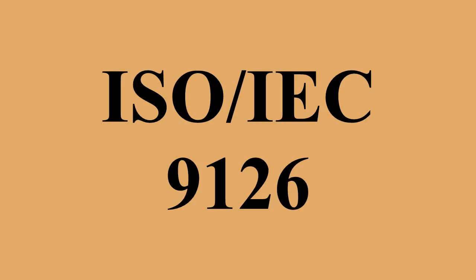ISO IEC 9126 distinguishes between a defect and a non-conformity: a defect being the non-fulfillment of intended usage requirements, whereas a non-conformity is the non-fulfillment of specified requirements. A similar distinction is made between validation and verification, known as V&V in the testing trade.